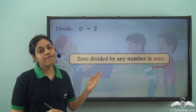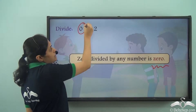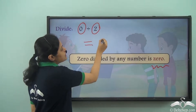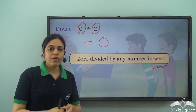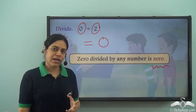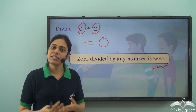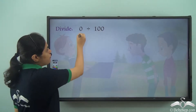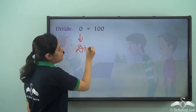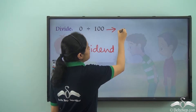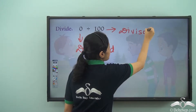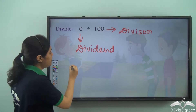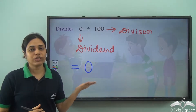This is very important. If I divide zero by any number, the answer is always zero. Because if I am dividing zero of anything among any number of people, they all will get nothing. So can you tell me the answer? Over here, zero is the dividend and hundred is the divisor. What is zero divided by hundred? I know zero divided by any number is equal to zero, so the answer is zero.